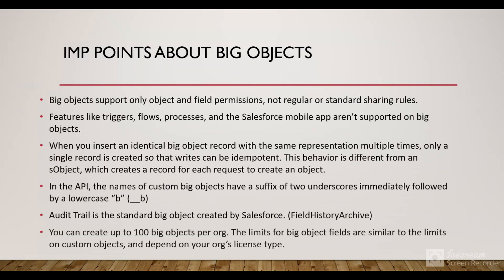Some important points about big objects: they support only object and field level permissions, not the regular standard sharing rules. Features like triggers, flows, processes, and the Salesforce mobile app are unsupported. The API prefix of a big object is '__b', while custom objects use '__c'. The standard audit trail — used by Salesforce for history tracking — is a standard big object with API name FieldHistoryArchive. You can create up to 100 big objects per org.